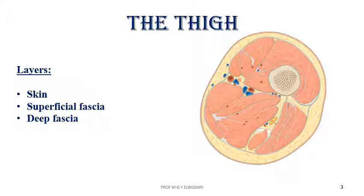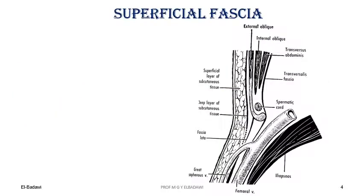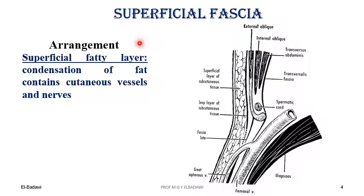We are going to start with the superficial fascia. The superficial fascia of the thigh is divided into two layers: a superficial fatty layer and a deep membranous layer. The superficial fatty layer contains a good amount of fat and is continuous with that of the anterior wall and with that of the leg and foot. That layer of fat contains the cutaneous vessels and nerves supplying the skin.